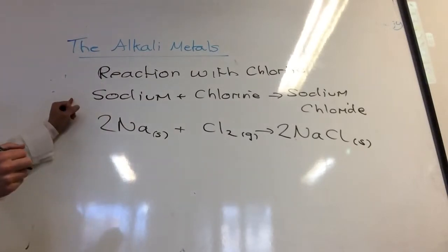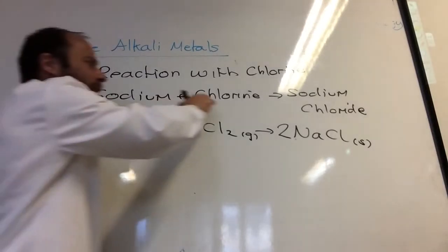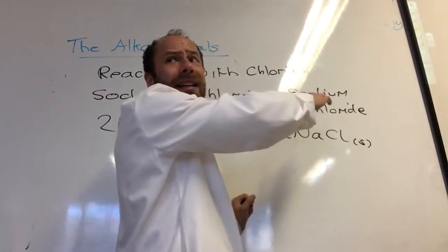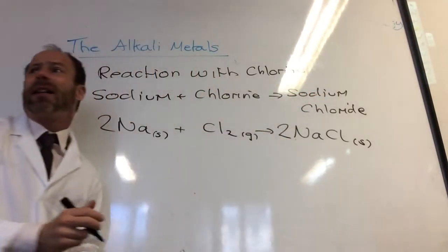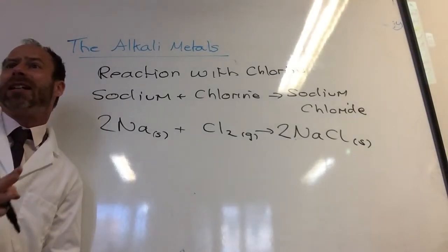If I had to change that to Potassium, it's dead easy. To change it to Potassium, all I had to do is go Potassium plus Chlorine gives me Potassium Chloride, and change your Na to a K. So it's dead easy.